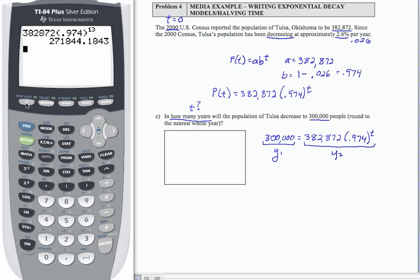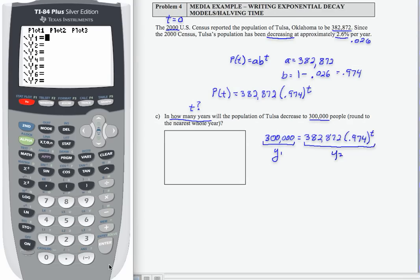So let's go over to our calculator, and for Y1, we're going to plug in 300,000, and for Y2, we're going to plug in 382,872, parenthesis, 0.974, exponent, T.